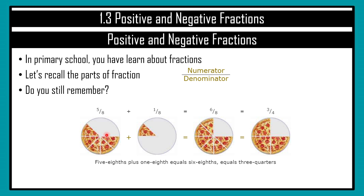Let's look at some operations. If we add or subtract any fraction, the denominator must be the same. For this example, these two pizzas have the same denominator, which is 8. So, 5/8 plus 1/8, you get 6/8. We can simplify this fraction by dividing both by 2: 6 divided by 2 is 3, and 8 divided by 2 is 4. So in the end, we get 3 quarters of the pizza.